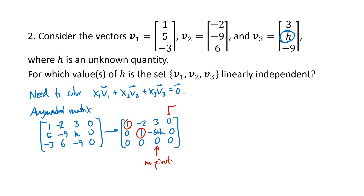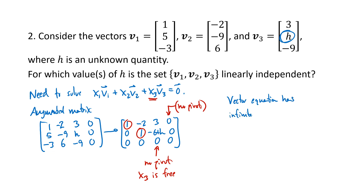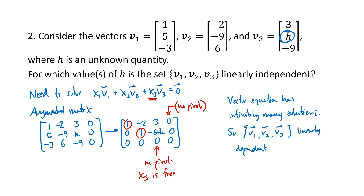Since there's no pivot in the augmented column our equation is consistent — which is expected for any homogeneous equation. More importantly, there's no pivot in column 3, meaning x3 is a free variable. So the homogeneous vector equation has infinitely many solutions, which means the set of vectors is linearly dependent, and this is true no matter what h is, since the absence of a pivot in column 3 didn't depend on h.